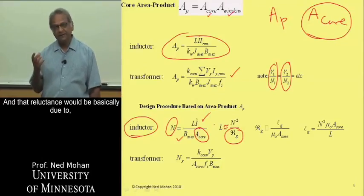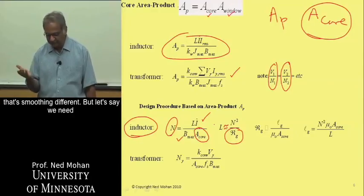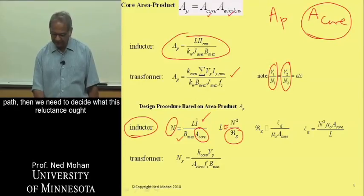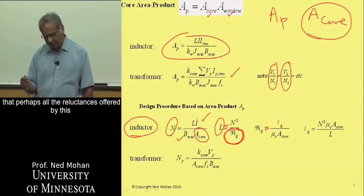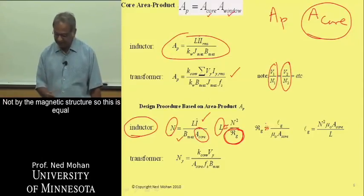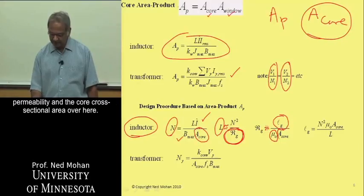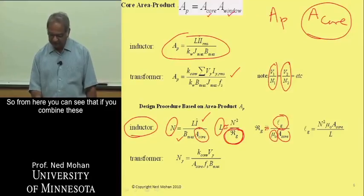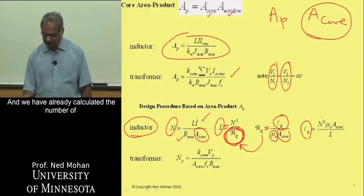The reluctance is basically due to an air gap cut in the flux path. If the core has a distributed air gap, that is different, but assuming all the reluctance is offered by the air gap rather than the magnetic structure, the reluctance equals the length of the air gap divided by the air gap permeability and the core cross-sectional area. Combining those two equations and substituting for the reluctance R_G, we can calculate the required air gap length for this structure.